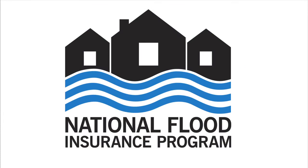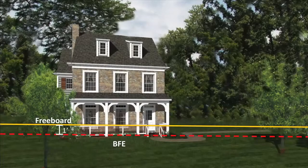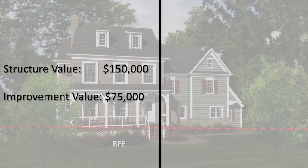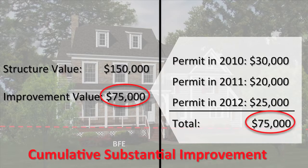The National Flood Insurance Program defines the term substantial improvement to mean any improvement to a structure the cost of which is 50% or more of its market value before the start of construction. The community's floodplain ordinance requires that substantially improved structures must be brought into compliance with the elevation or flood proofing requirements for new construction. Over the years, a community may issue a succession of permits for various minor improvements to the same structure without triggering the need for it to satisfy the elevation requirements, potentially greatly increasing total damages incurred in a flood event.